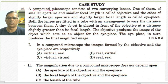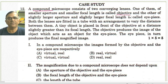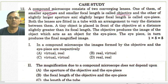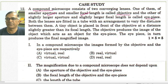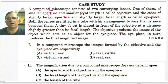A compound microscope consists of an objective lens. Its aperture is small and its focal length is small. It also has an eyepiece. This eyepiece has a slightly larger aperture and slightly larger focal length.